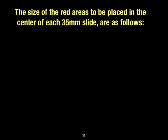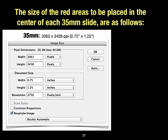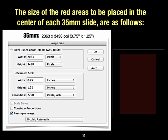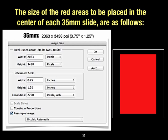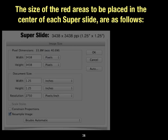The size of the red areas to be placed in the center of each 35mm slide: go up under Image Size — make the width 0.75, the height 1.25, and the resolution 2750. You can use that resolution for both inkjet and for sending out to Gamma Tech — Gamma Tech wants it at 2750. Your inkjet printer won't print at that resolution, but that's okay. That way you don't have to keep separate files for inkjet and for Gamma Tech; just use the same process and you'll be fine.